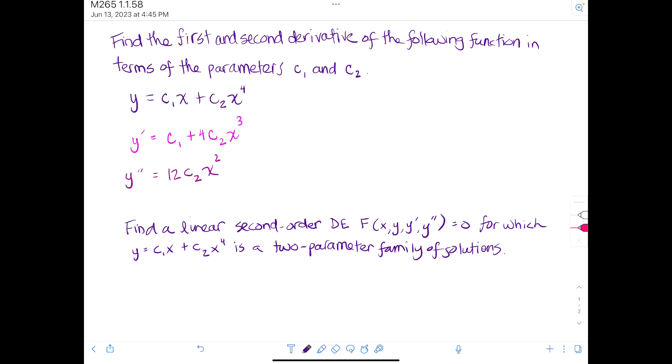So we basically want to get rid of the c1 and the c2 and have things just in terms of x, y, y prime, and y double prime. So how do we do that? Well, we need to figure out what c2 is and what c1 is in terms of y double prime and y prime.